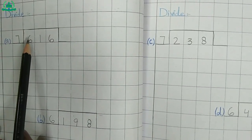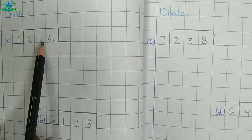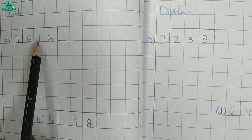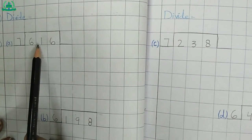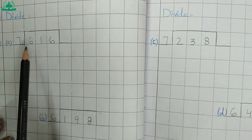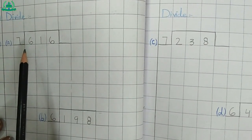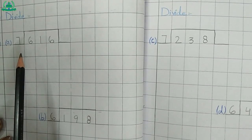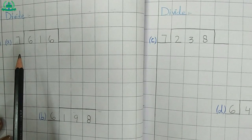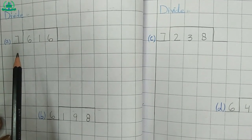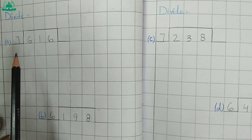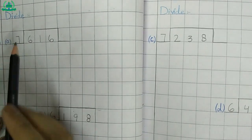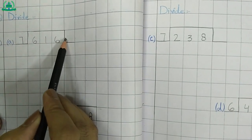We cannot solve this value at a time from 7, so we take the first 2 digits: 61. How many times do we need 7 to make 61? 7 times 8 is 56, and 7 times 9 is 63. 63 is greater than 61, and 56 is smaller, so we take 56. 7 times 8 is 56.